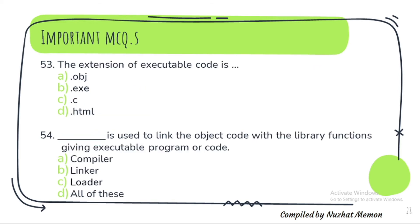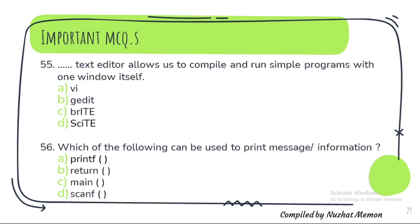Question 53: The extension of executable code is .exe — option B. Question 54: What is used to link the object code with the library functions giving an executable program or code? The correct option is B — linker. Question 55: The dash text editor that allows us to compile and run simple programs with one window is option D — Skite editor.